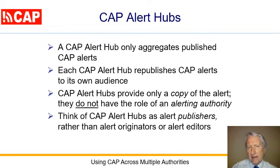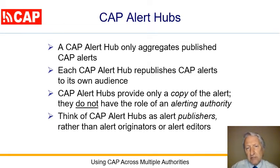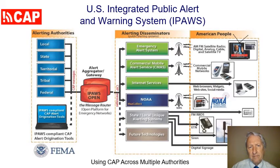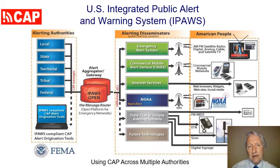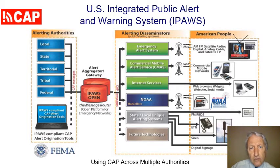It's important to emphasize the CAP alert hub provides only a copy of the alert. It does not have the role of an alerting authority. Think of a CAP alert hub as a publisher rather than an originator or editor. The United States Integrated Public Alert and Warning System is a CAP alert hub. It aggregates CAP alerts from more than 1,600 federal, state, local, tribal, and territorial alerting authorities.